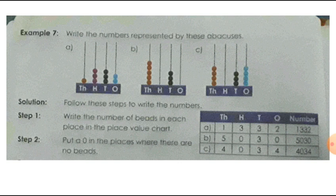In the second abacus: thousands place has 5 beads, hundreds place has no bead so we put a zero, tens spike has 3 beads, and ones spike has no beads so we put a zero there also. So the number is 5030.